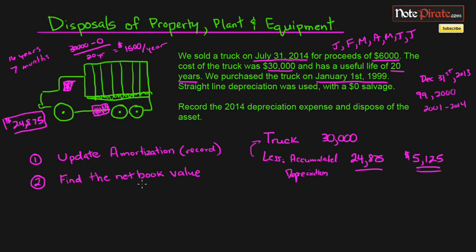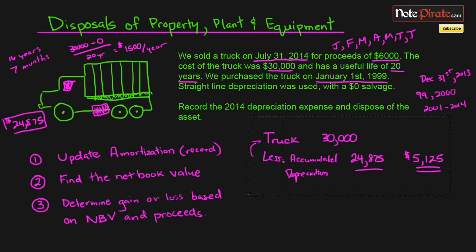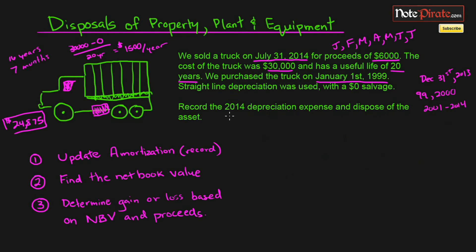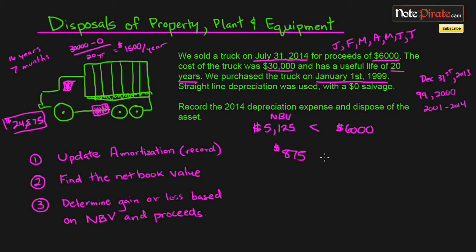We needed the net book value because the difference between it and the proceeds is the gain or the loss. The net book value is $5,125 and the proceeds are $6,000. Since the net book value is less than the proceeds, we are receiving $875 more than the asset's book value — so this is a gain. When net book value is lower than proceeds, it equals a gain; when net book value is greater than proceeds, it equals a loss.